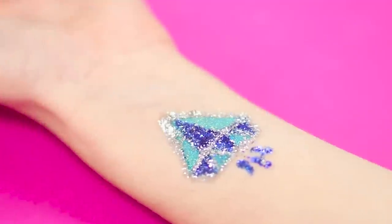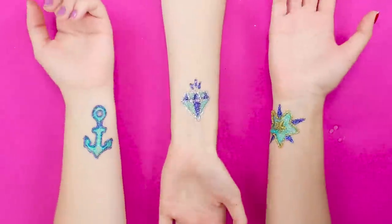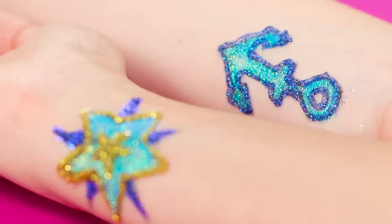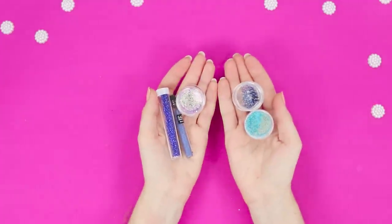This summer, you will shine like a real diamond! We will tell you how to quickly and painlessly decorate your body with temporary glitter tattoos. You will need a multicolored glitter, a transparent body glue, and nail polish remover.